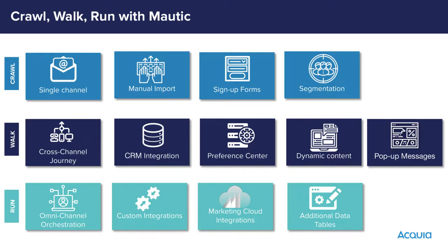In Europe, a preference center is more of a crawl stage because it's much more of a legal requirement there. Mixing in things like adding content, pop-up messages or focus items, and then the run stage — that's getting really advanced and a lot more technical, where you're probably not going to just be able to do everything as a marketer. Some of the new plug-ins and integrations can really help you get to the run stage.